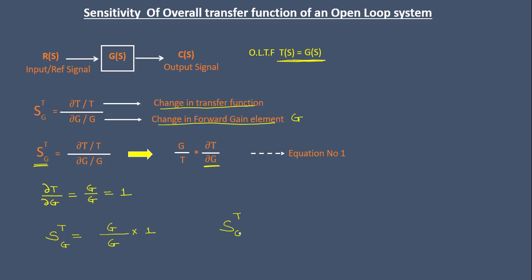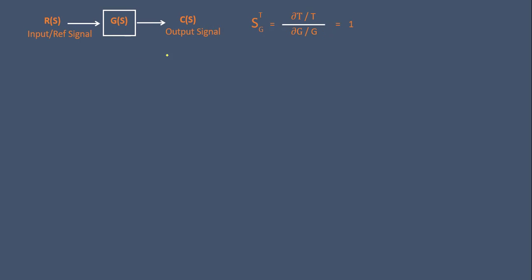The value of the transfer function is G, so G/T equals G/G which equals one. Therefore, the sensitivity of a transfer function with respect to G for an open loop system is one. Now let us see with an example the disadvantage of having a sensitivity of one for an open loop system.